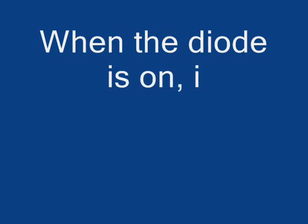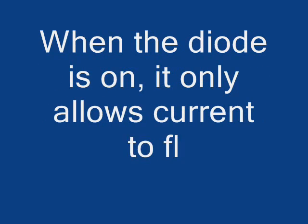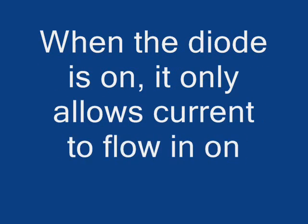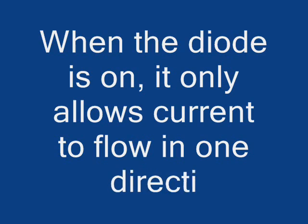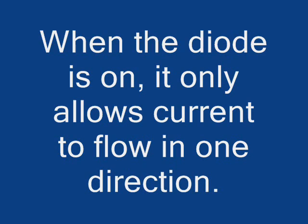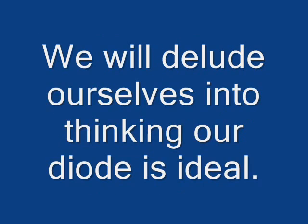When the diode is on, it only allows current to flow in one direction. When the diode is off, if it's ideal, no current flows. We will assume our diode is ideal.